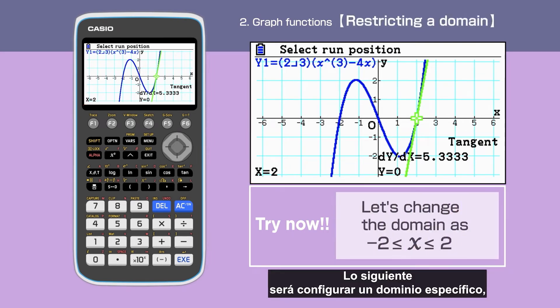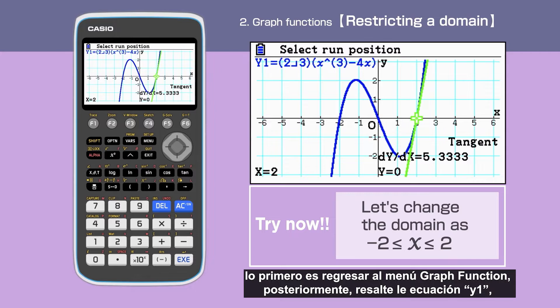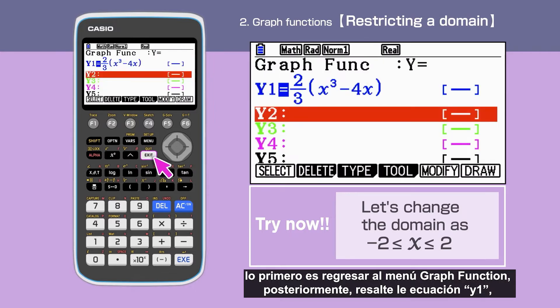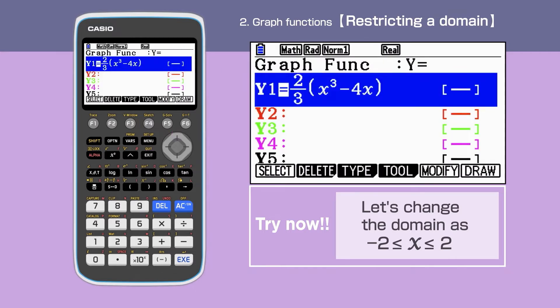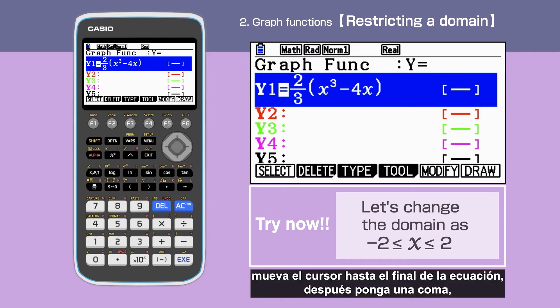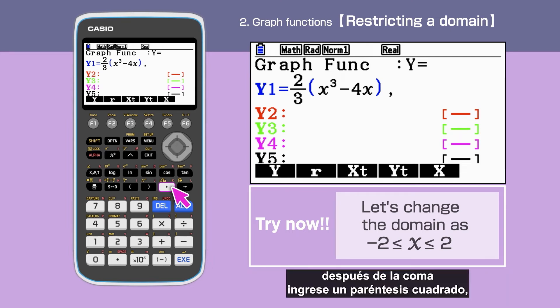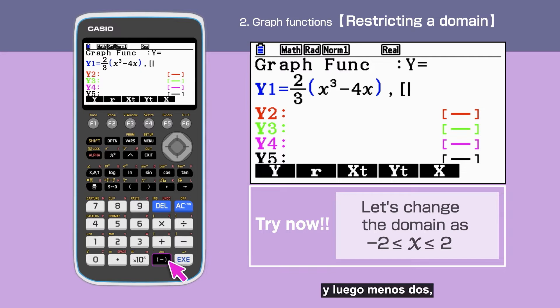Next, we are setting a domain. We will use the same function for this. Go back to the graph function screen and highlight y1. We are setting the domain as x is between minus 2 and 2 as an example. Move the cursor at the end of the equation, then put a comma. After the comma, press a square bracket.